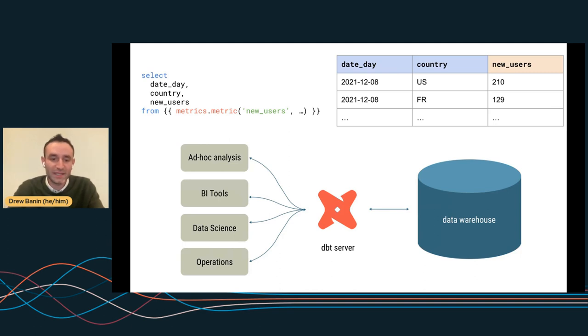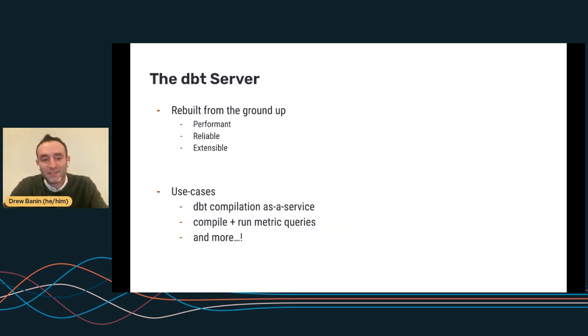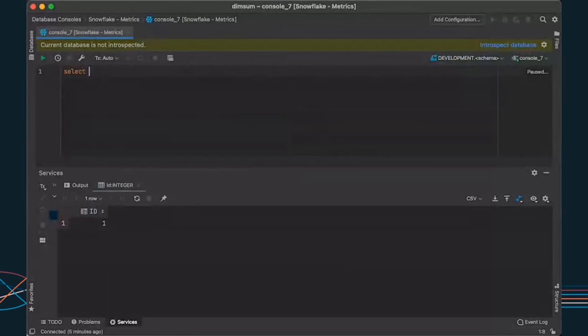So we talked about the dbt server. Some of the things to call out here, it's built to be incredibly performant. Batch-based processing is one thing, but being on the critical path of analytics is another. So we're building this thing to be incredibly performant and reliable and extensible to use cases that extend even beyond metrics calculations. And so in a lot of ways it's dbt compilation as a service. It's an integration point for tools that want to interface with the dbt compilation magic. And I think actually at this point, I've stopped long enough. It's time to show it to you. Vince, do you mind hooking me up here? Thanks a lot.